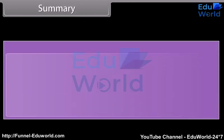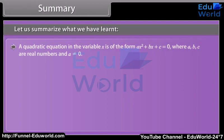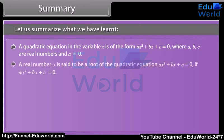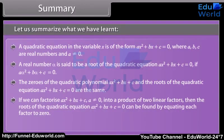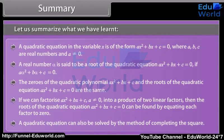Summary. Let us summarize what we have learned. A quadratic equation in the variable x is of the form ax squared plus bx plus c equals zero, where a, b, c are real numbers and a is not equal to zero. A real number alpha is said to be a root of the quadratic equation if a·alpha squared plus b·alpha plus c equals zero. The zeros of the quadratic polynomial ax squared plus bx plus c and the roots of the quadratic equation ax squared plus bx plus c equals zero are the same. If we can factorize ax squared plus bx plus c into a product of two linear factors, then the roots can be found by equating each factor to zero. A quadratic equation can also be solved by the method of completing the square.